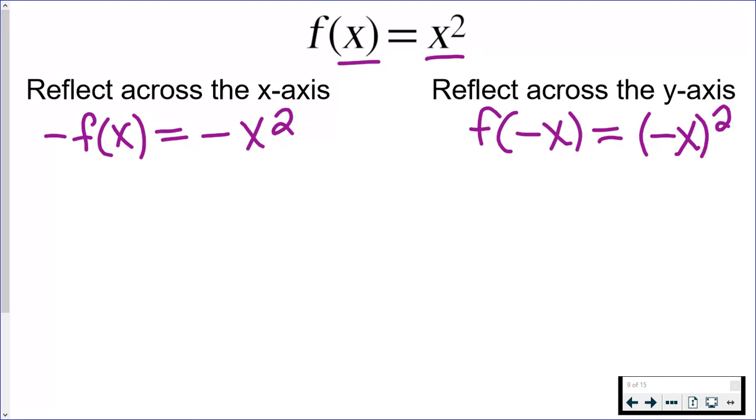With the reflection across the x-axis, the negative sign is not inside the parentheses. So the exponent has nothing to do with that negative. These are very different equations.